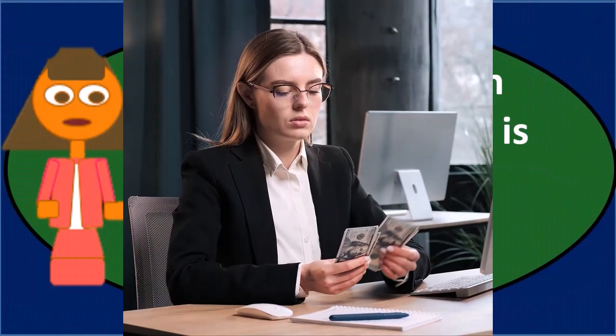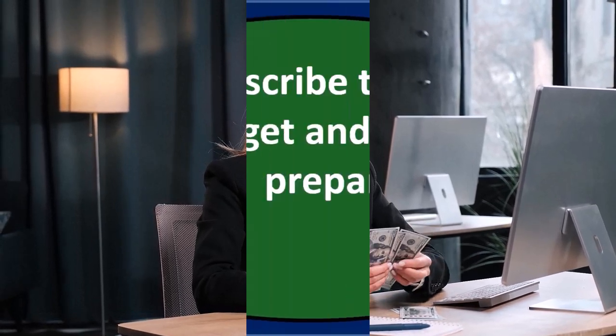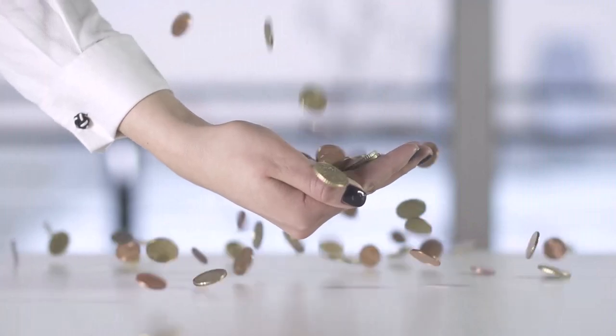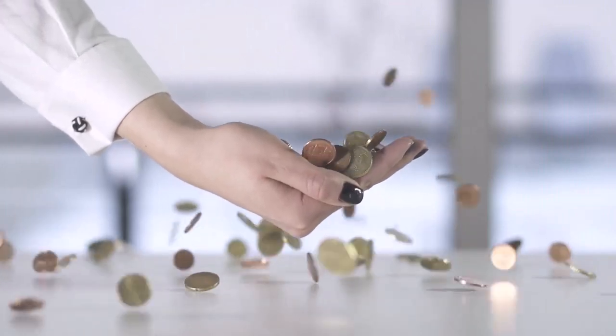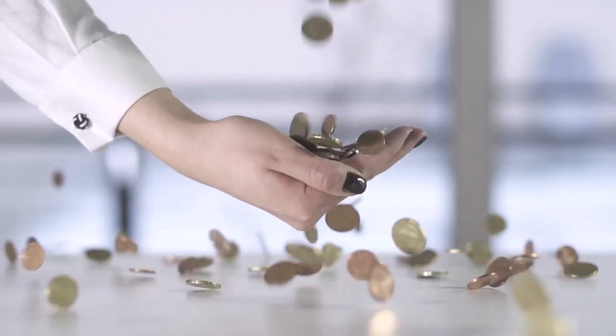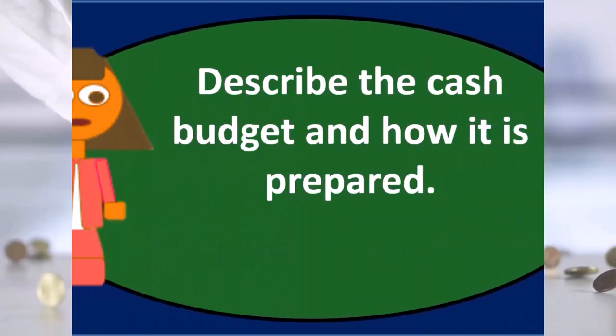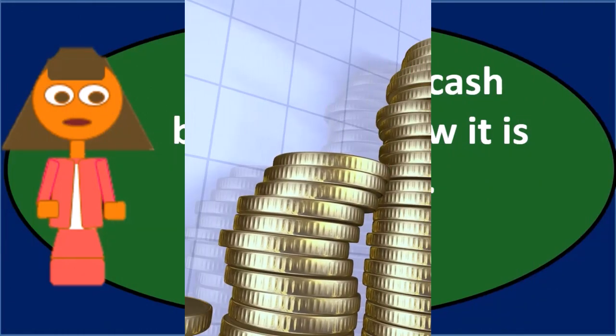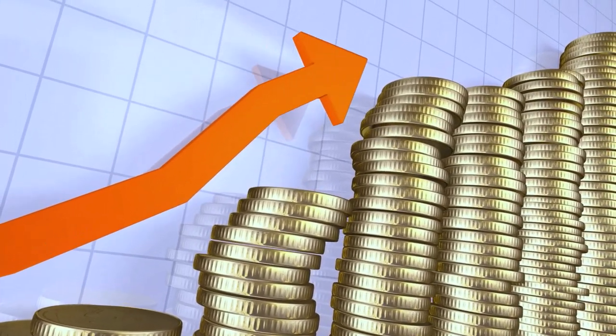We can go through the list of the order in which the budgeting process will typically take place, starting with the sales budget, typically ending with the financial statements — the budgeted balance sheet and the budgeted income statement. The cash budget will typically be towards the end of this process as well, towards where we finally end up with the budgeted balance sheet and the budgeted income statement.